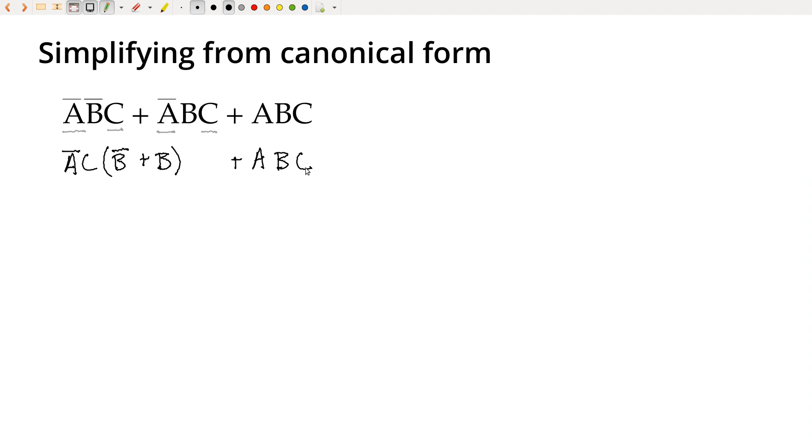Now we've got not B and B, or sorry, not B or B, and so that will always be true. One or the other, either not B has to be, if B is true, then this is true, or if B is false, then not B must be true. So we can just cross this whole thing out, and we'll end up with not A, C, or A, B, C.